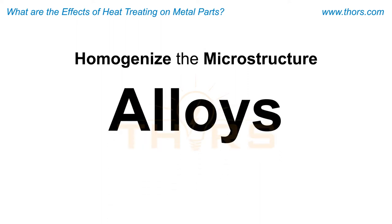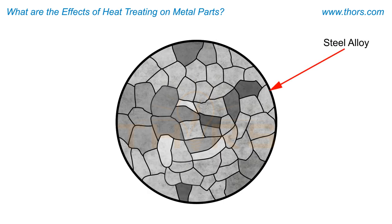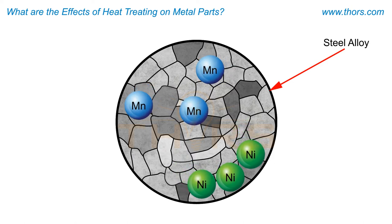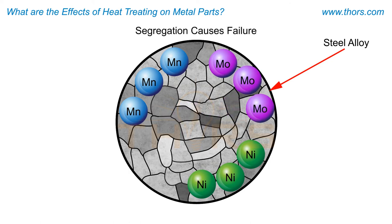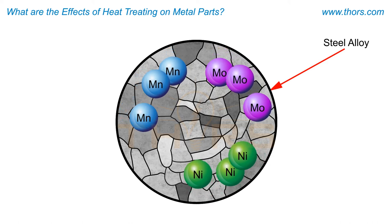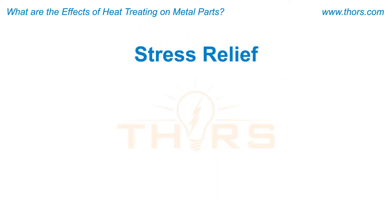Another prominent reason for heat treating is to homogenize the microstructure of metal parts. Commercial alloys are comprised of many different metals that are only attracted to themselves and not to other metals. In a steel alloy, the microscopic pieces of nickel will be attracted to other nickel, the manganese to other manganese, the molybdenum with other molybdenum, and so on. This segregation will create weak grain boundaries and decrease the part's strength. Heat treating causes similar metals that were fused together to relax and diffuse more uniformly into the alloy, thus homogenizing the microstructure.